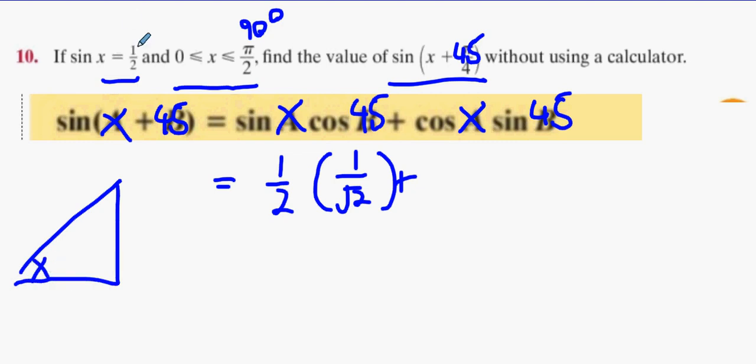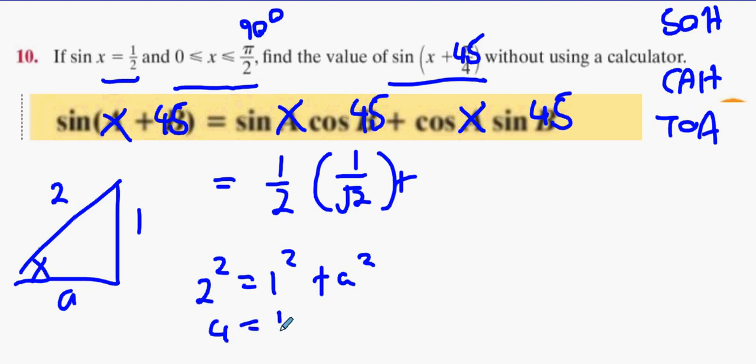See, he knows his stuff. Sine is opposite over hypotenuse, which is 1 over 2. We could use Pythagoras' theorem to find the adjacent. So 2 squared equals 1 squared plus a squared. 4 equals 1 plus a squared. A squared equals 3. A equals root 3, cool with you guys?